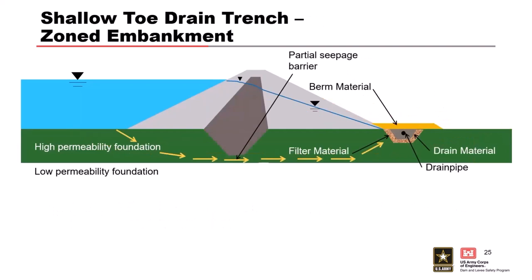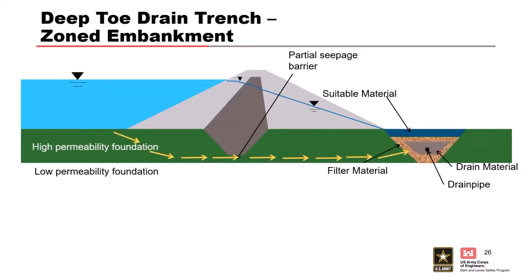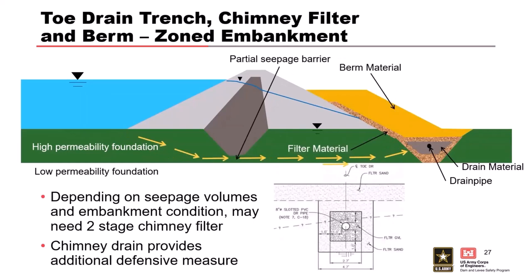Here's another concept — a shallow toe drain. Maybe you've got issues at the toe and can put in a filter, gravel, and pipe with a little berm over it to confine it. Just a simple toe drain could address a lot of your foundation seepage issues. A deeper variation addresses deeper layers. A more robust version also addresses embankment seepage: do your toe drain and pipe, then run a chimney up the embankment and cover it with a berm. Depending on how much water is coming through the embankment, you may need a two-stage chimney — both a filter and a drain — because there are case histories where even a single-stage filter got overwhelmed with large seepage flows from glacial open-work gravels.